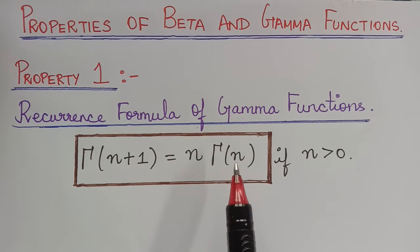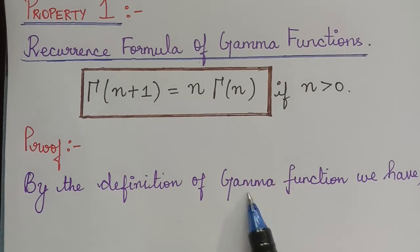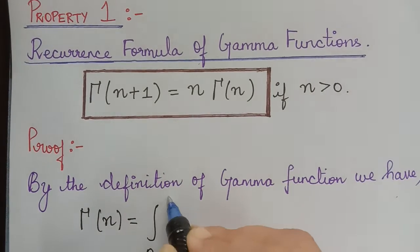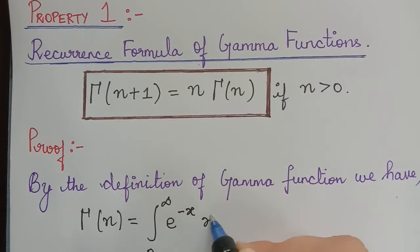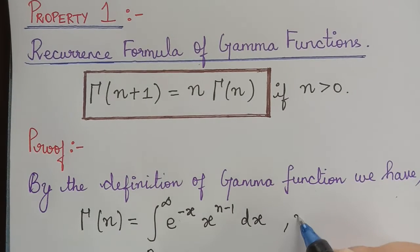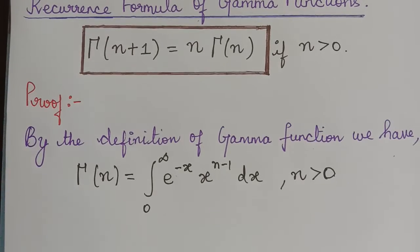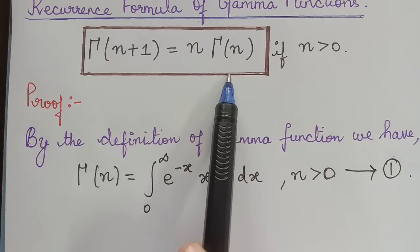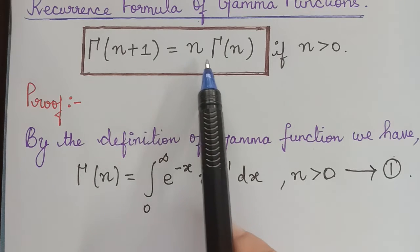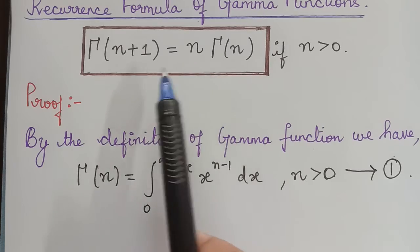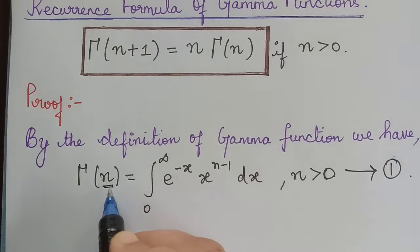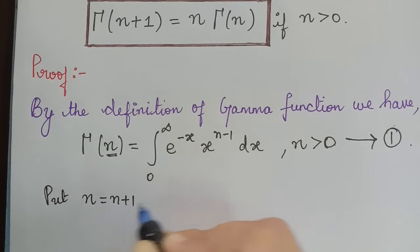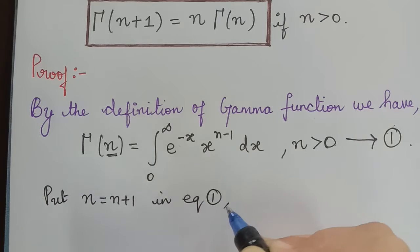We shall now prove this recurrence formula. By the definition of gamma function, we have gamma of n equal to the integral from 0 to infinity of e to the power negative x, x to the power n minus 1, dx, for all n greater than 0. Let us mark this as equation 1. Now, we have to prove that gamma of n plus 1 is equal to n times gamma of n. In order to prove that, we shall replace n by n plus 1 in equation 1.